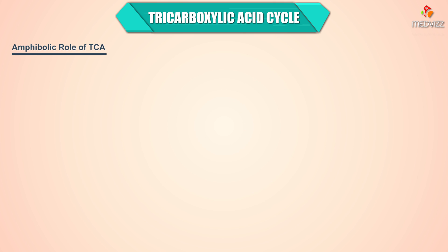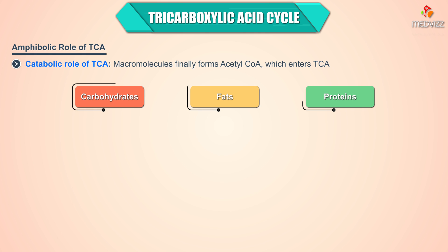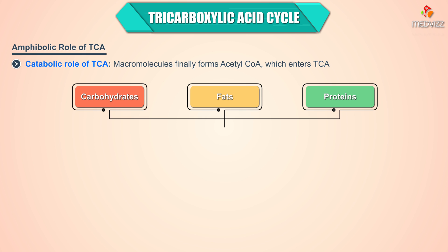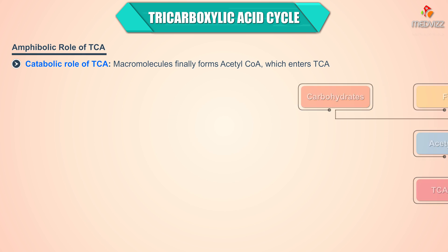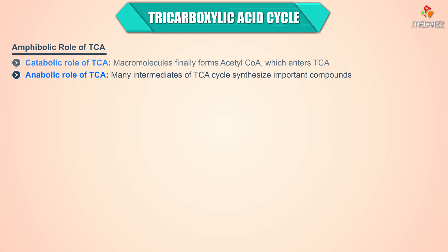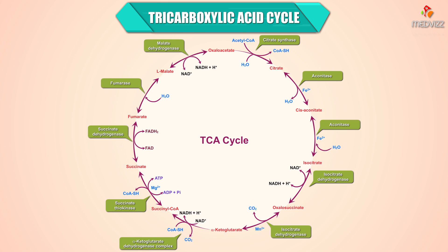The amphibolic role of TCA includes both catabolic and anabolic functions. In its catabolic role, macromolecules are ultimately broken down to form acetyl coenzyme A, which enters the TCA cycle. In its anabolic role, many intermediates of the citric acid cycle are used to synthesize important compounds.